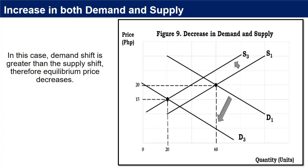The effect on equilibrium price depends on the degree of changes in demand and supply. If the demand shift is greater than the supply shift, the equilibrium price decreases. However, if the supply shift is greater than demand, the equilibrium price will increase.